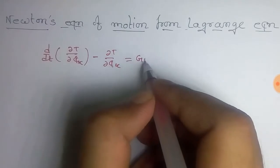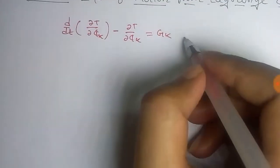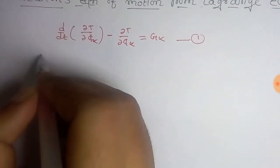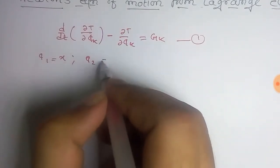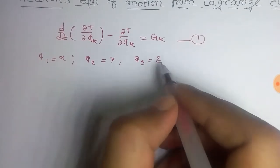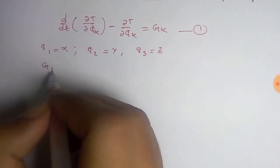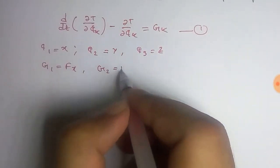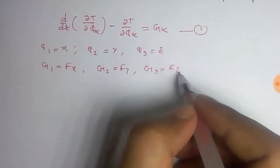We take this as equation number one. We take here q1 equals x, q2 equals y, and q3 equals z. The generalized force components are G1 equals Fx, G2 equals Fy, and G3 equals Fz.